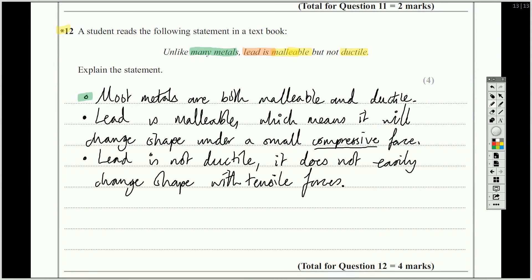So actually we've got all the marks we could possibly get here. We've got four marks because even though we've only made three statements here, we have talked about what lead is or isn't, and we have defined our two key words, the compressive for the malleable and the tensile for the ductile. Even if you've just written malleability means plastic deformation under compressive force, ductility means plastic deformation under tensile forces, then you would have got at least two marks already. But it's actually linking it to the question and explaining what that means in terms of lead that's going to unlock the other two marks there.